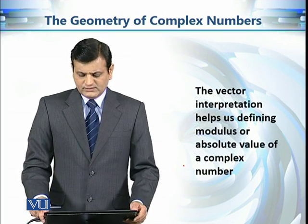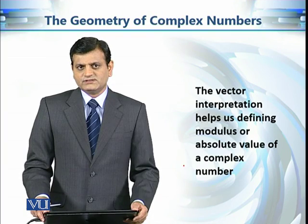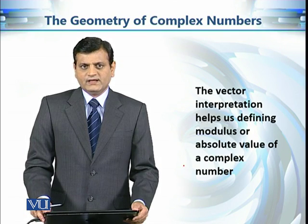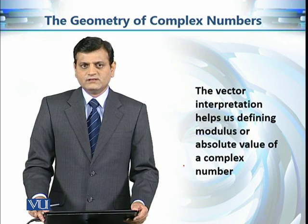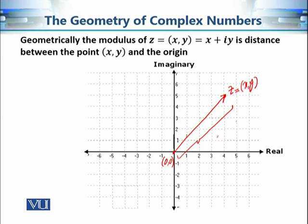Our next definition is the modulus of a complex number. Using this vector representation, we can define the modulus or absolute value of a complex number. This definition should be such that when restricted to the real numbers, it gives the absolute value of a real number. If we have complex number z equal to (x, y), we associate a vector with tail at the origin and head at (x, y). Geometrically, the modulus of a complex number is the length of this vector.